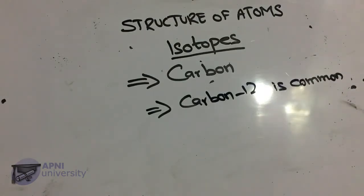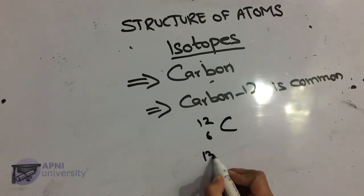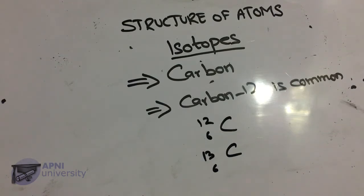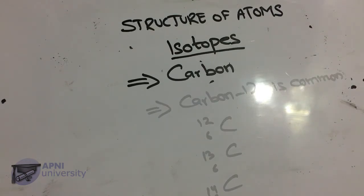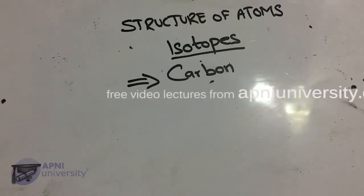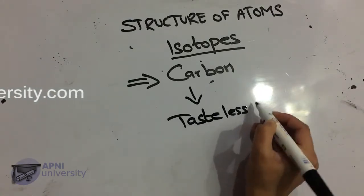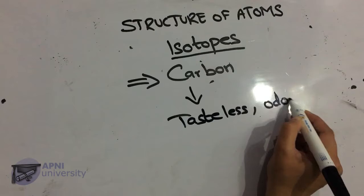Carbon-13 has symbol ¹³₆C and has 7 neutrons and 6 protons. Carbon-14 has 8 neutrons and 6 protons, with symbol ¹⁴₆C.